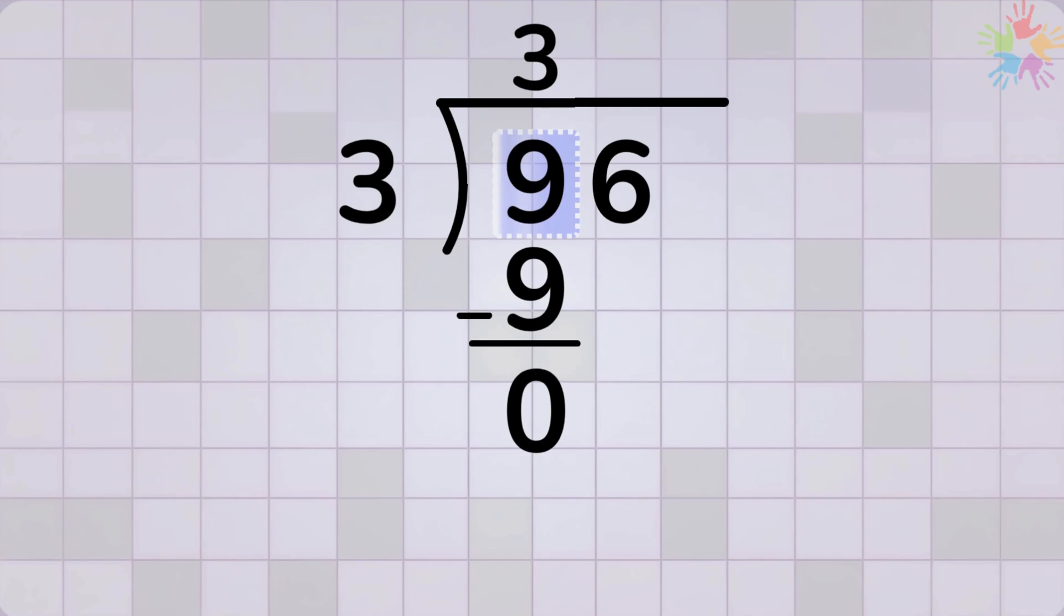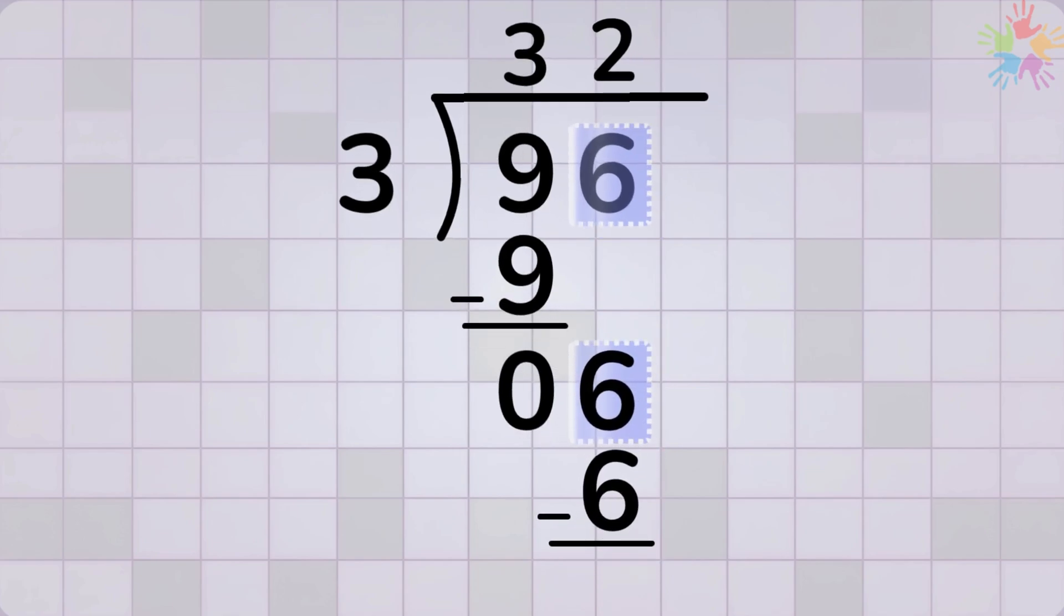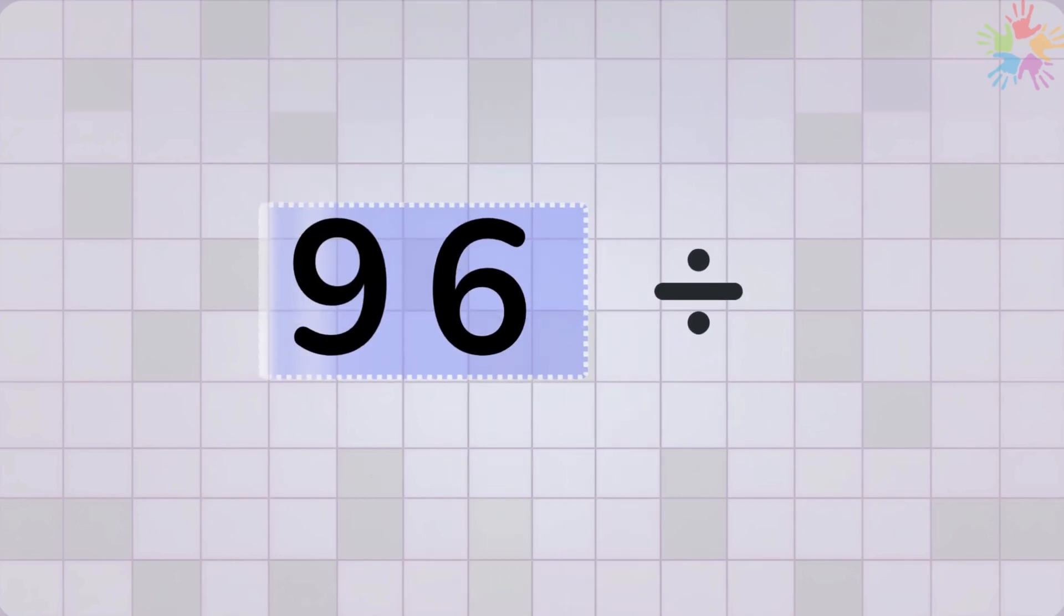Now bring down the next digit 6. How many times does 3 go into 6? That is 2 times. Because 3 times 2 equals 6. Subtract. 6 minus 6 equals 0. Nothing left. So the answer is 32. 96 divided by 3 equals 32.